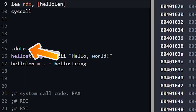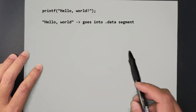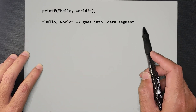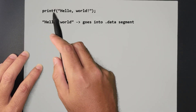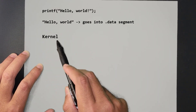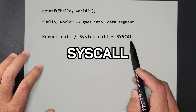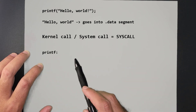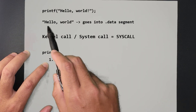The hello world string itself is going to go into the data segment - it's a string literal that goes into the data segment of RAM, which we can then call later using its address. As for the rest of what printf does, at the end of the day it talks to the kernel or operating system and makes a system call. So printf first formats a string; we don't need to do that - our string is going to be ready to go.